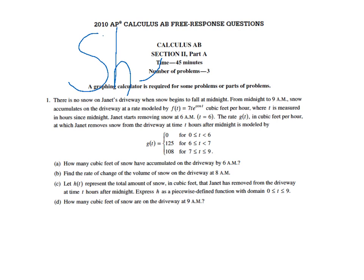Janet starts removing snow at 6 a.m., time equals 6. The rate g(t) in cubic feet per hour at which Janet removes snow from the driveway at time t hours after midnight is modeled by the piecewise function g(t) equals 0 from 0 to 6, then 125 for 6 to 7, and then 108 for 7 to 9.